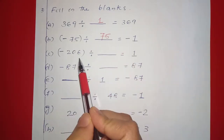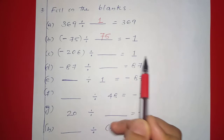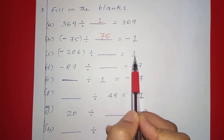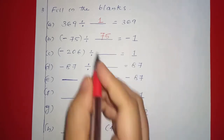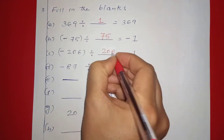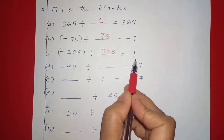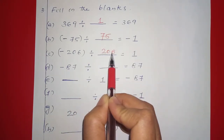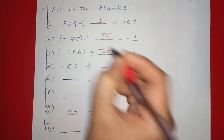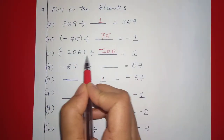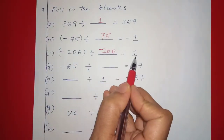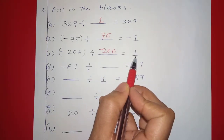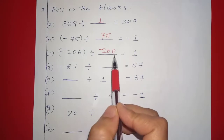Next: negative 206 division dash is equal to 1. Since the answer is positive 1 and the numerator is negative, we need to divide by negative 206. So the answer is negative 206.